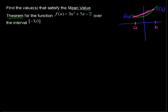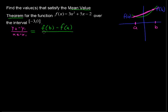Whatever that slope is, it's the slope inherent through those points. We know it as y₂ minus y₁ over x₂ minus x₁ — that's the algebraic way. When we get into calculus, we write f(b) minus f(a) over b minus a. It means exactly the same thing: the difference of the y-coordinates divided by the difference of the x-coordinates.